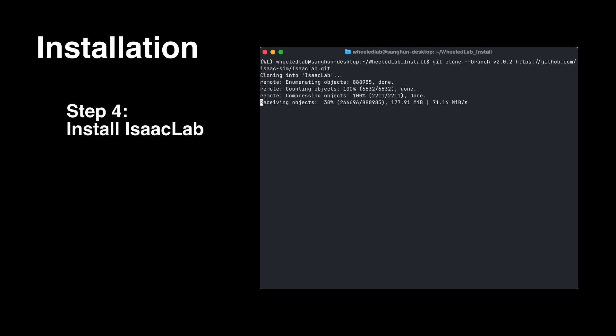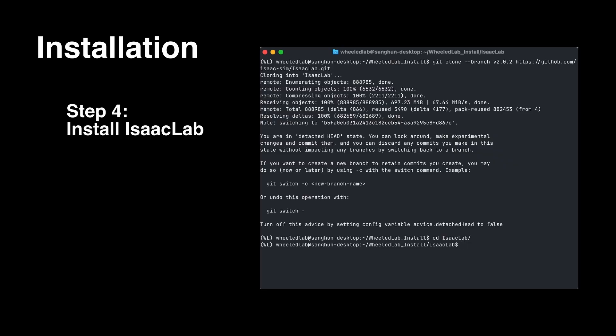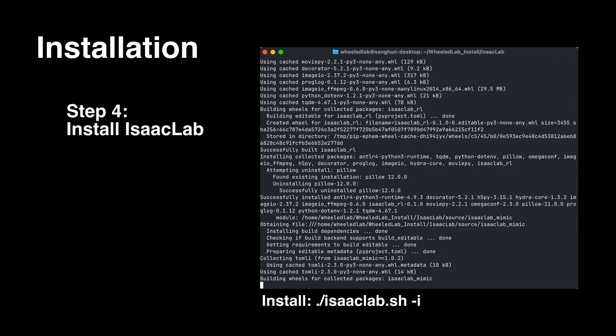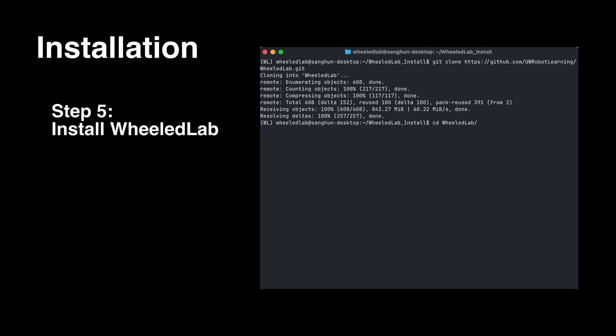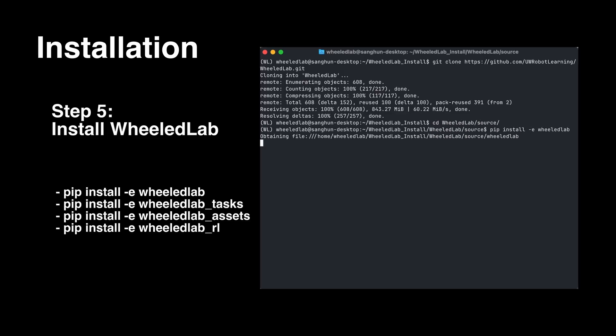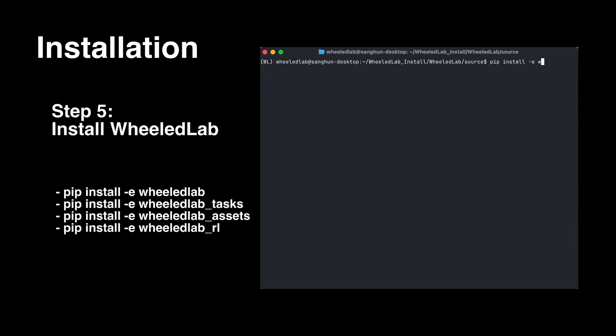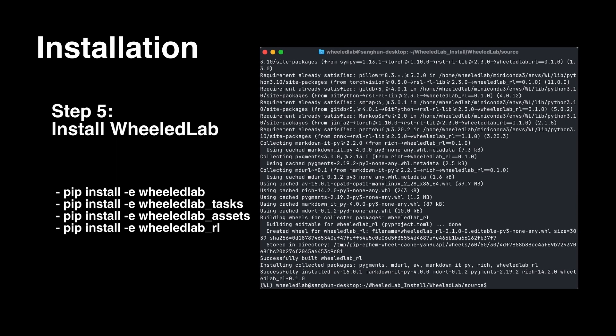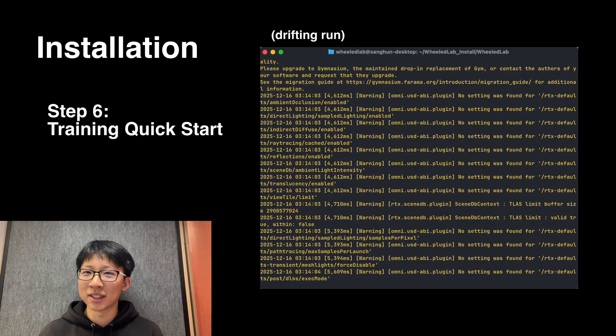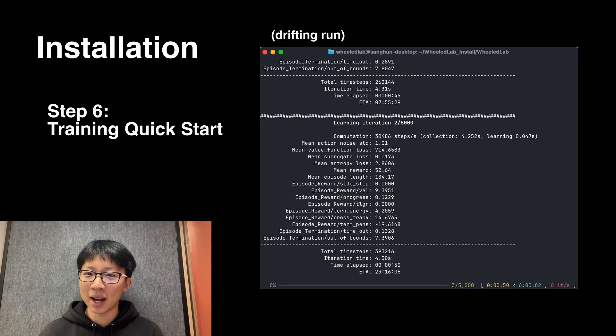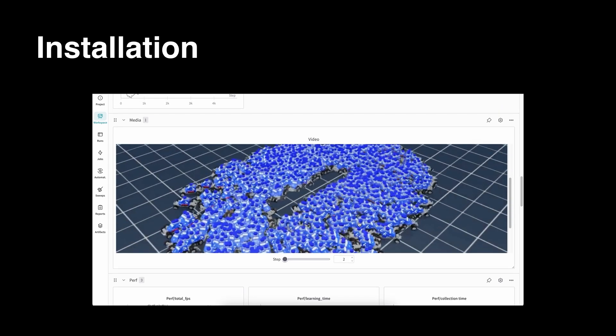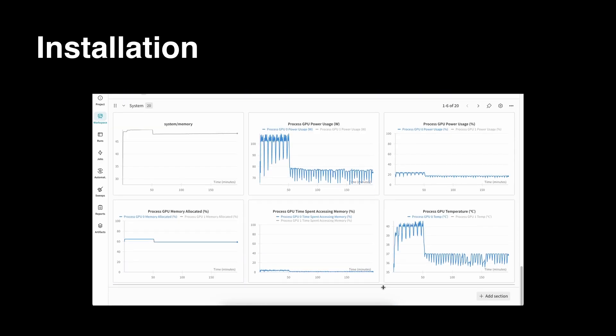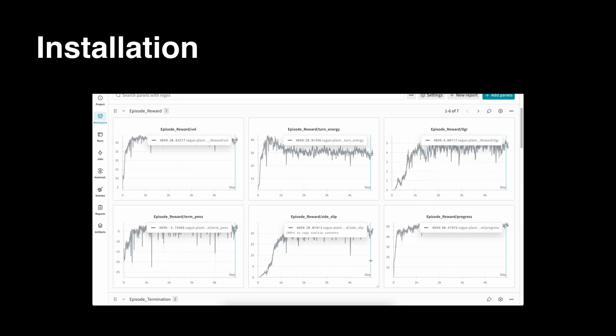We will clone IsaacLab, and then let's go to the IsaacLab directory and install the extensions needed for IsaacLab using the install argument. Finally, clone WheelLab. Jump into the WheelLab source directory and then install WheelLab, WheelLab tasks, WheelLab assets, and WheelLab RL using the following commands. To make sure everything works, let's try running one of our sample tasks. We recommend creating a weights and biases account so that visualizing is a lot easier. And there we go. We've just successfully ran a training run for drifting. We can visualize what just happened in weights and biases. And in future videos we'll dive deeper into how we can use the data in weights and biases to get a better understanding of how our training went.